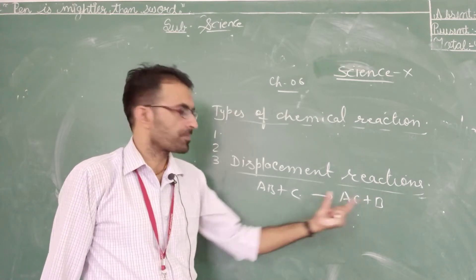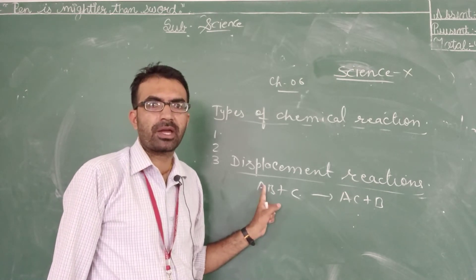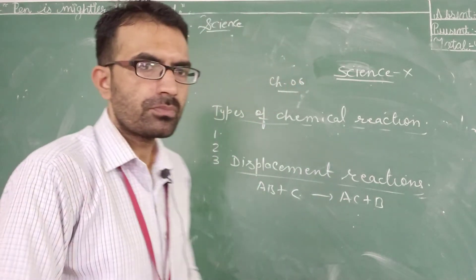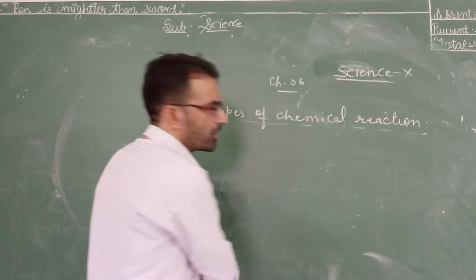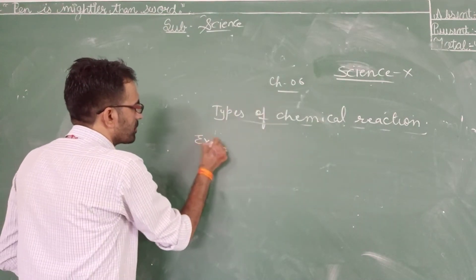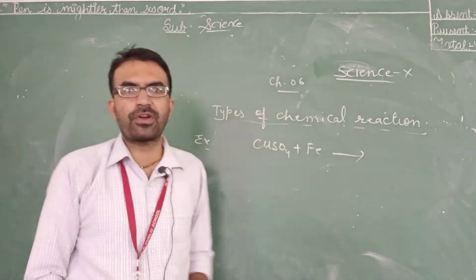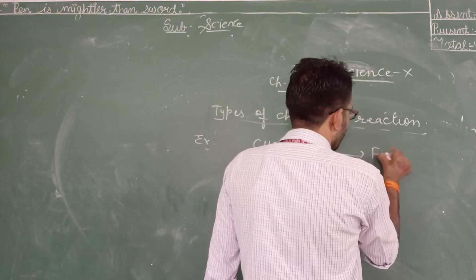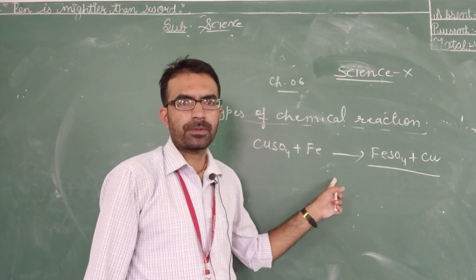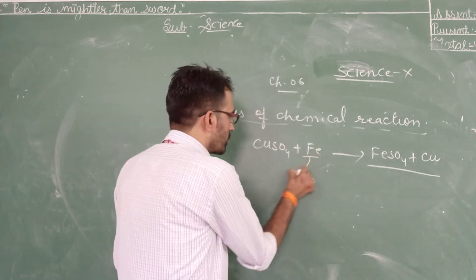Such types of reactions are known as displacement reactions. For example, suppose we have CuSO4 plus Fe; the products will be FeSO4 plus Cu. This is a pure example of a displacement reaction, because Fe is more reactive than Cu.